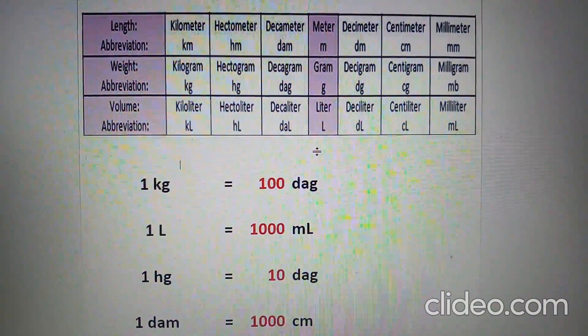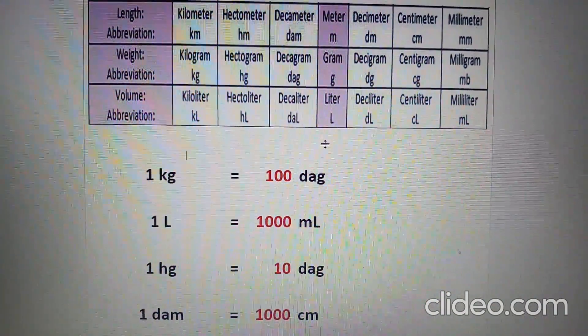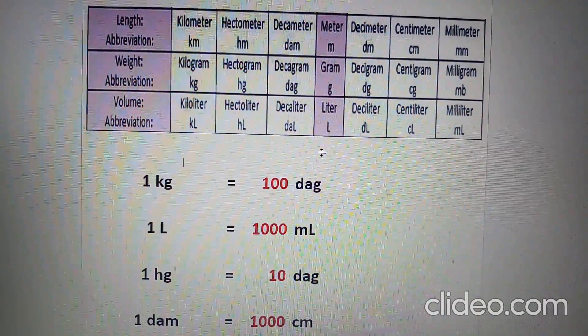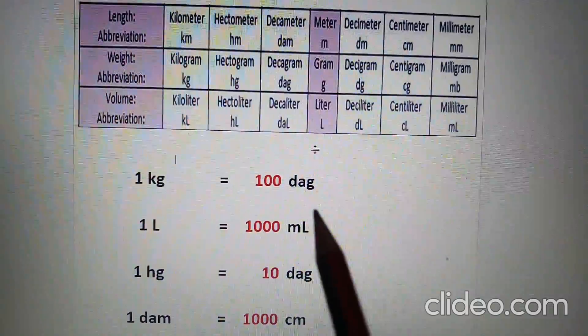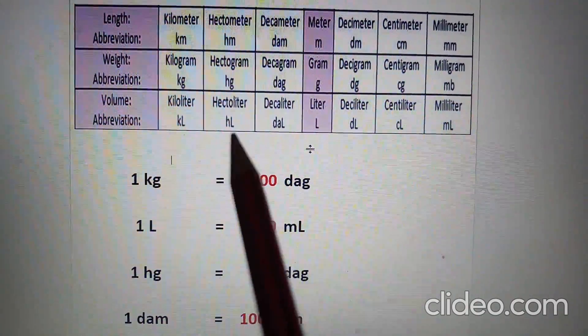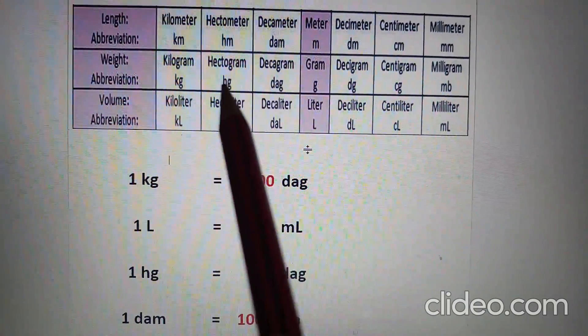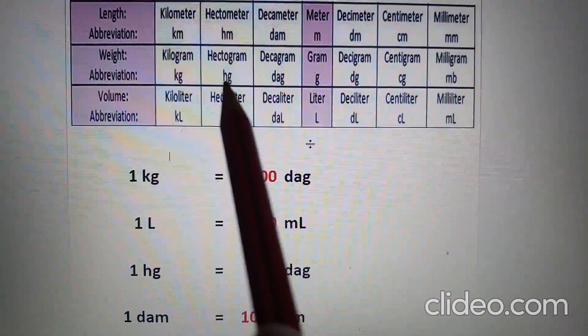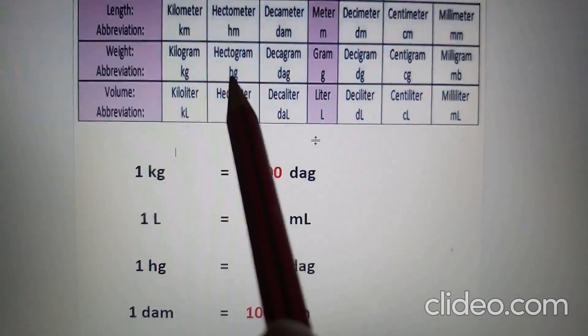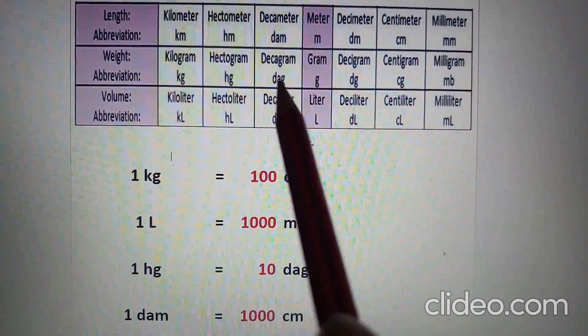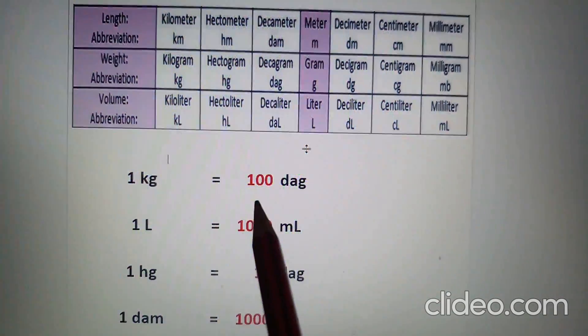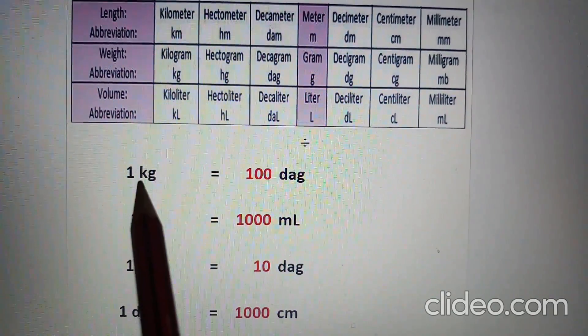Using the metric chart, we can do conversions very easily. Suppose we have to find out 1 kilogram equals how many decagrams. From kilogram to decagram, we move two steps to the right—10 and 10. 10 times 10 equals 100. Therefore, there are 100 decagrams in 1 kilogram.